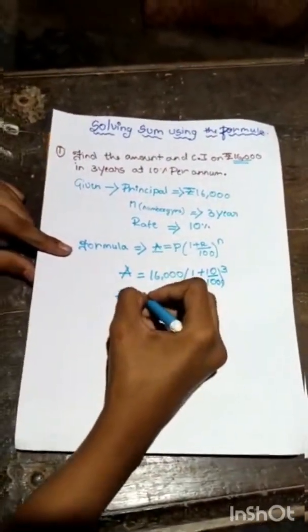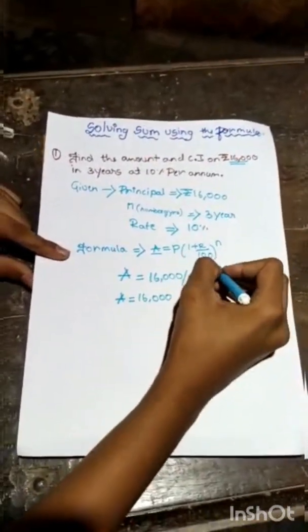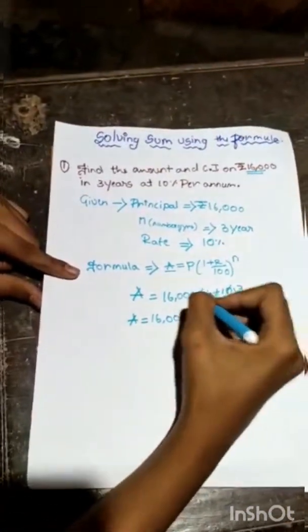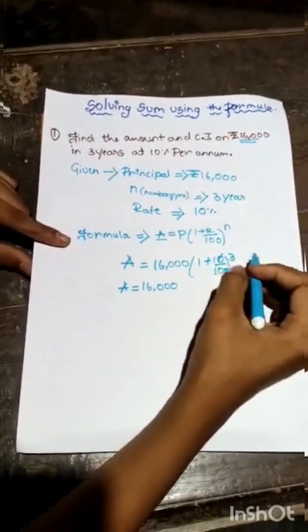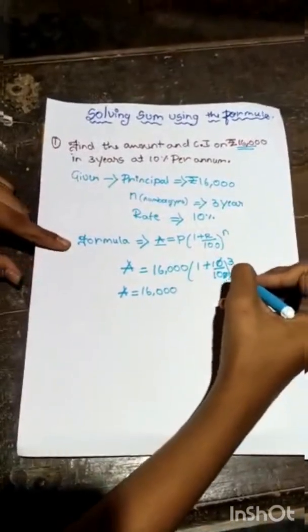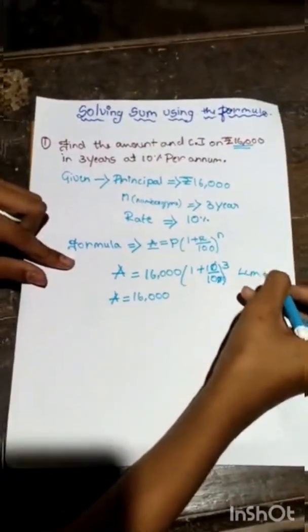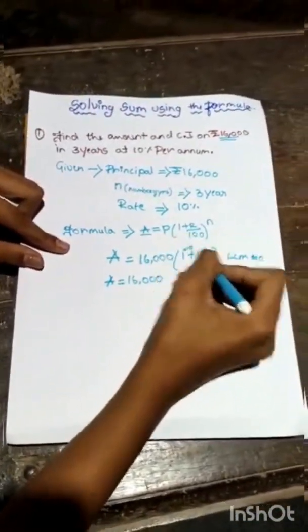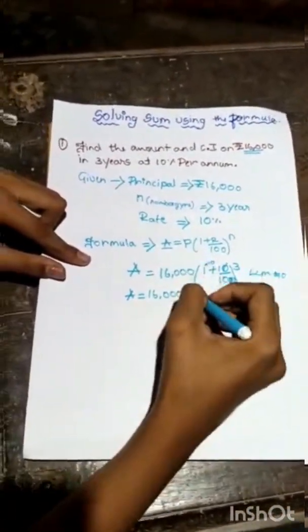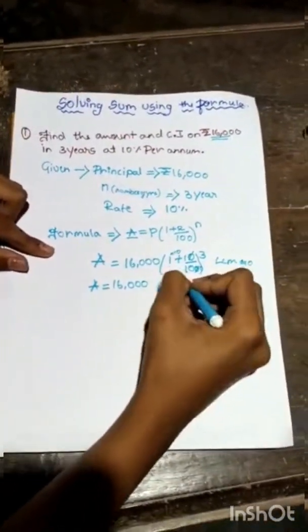We'll cancel here. And here, below the one, the denominator is not given. So if we take LCM, the LCM is 10. Then we will multiply and it will be 11 by 10, raised to the power 3.